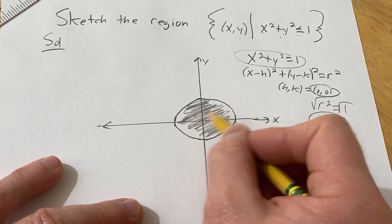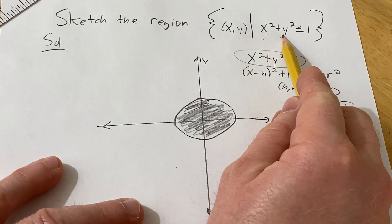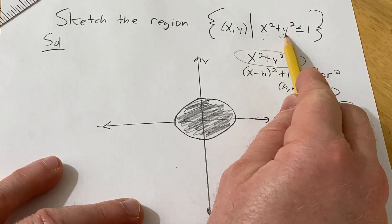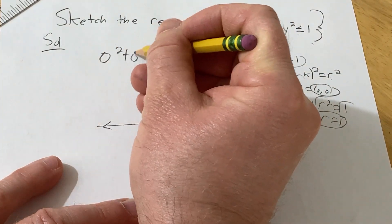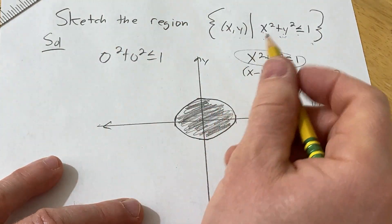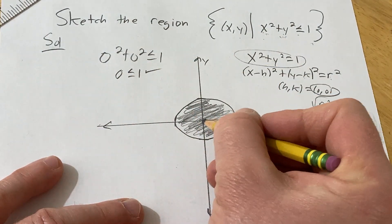And if you're not sure about why that's true, you can just pick test points. For example, (0, 0) is here because 0 squared plus 0 squared is 0 and 0 is less than or equal to 1. Because you would get this if you plug in (0, 0) into this inequality, and that's true. So you would pick this point here.